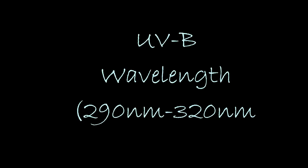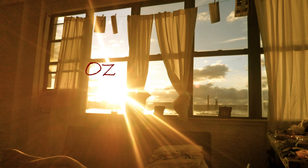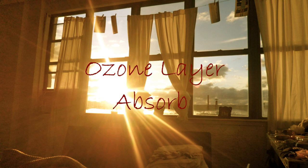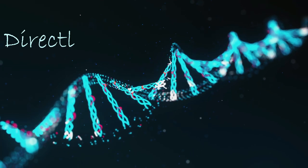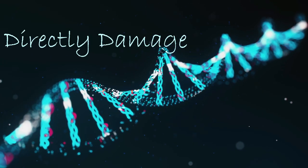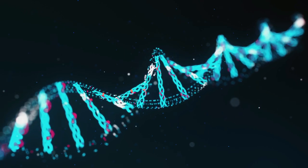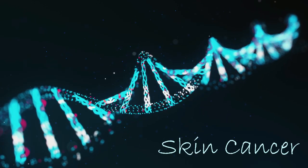Let's talk about the second type, which is UVB rays. UVB has a wavelength of 290 nanometers to 320 nanometers. It cannot easily penetrate windows and clouds, and a portion of it is absorbed by our ozone layer and atmosphere. However, it is so dangerous that it can directly damage our DNA, which is the reason for skin cancer.